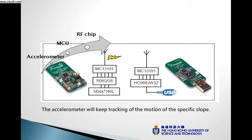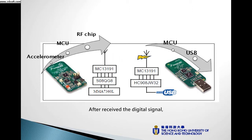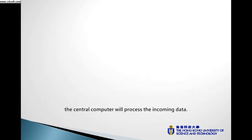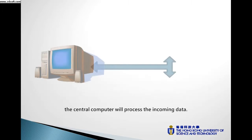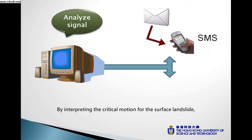The accelerometer will keep tracking of the motion of the specific slope. The signal of the motion sensor will be sent to the model through the RF transceiver by using the V protocol. After receiving the digital signal, the central computer will process the data. The software used is created with the direct view.